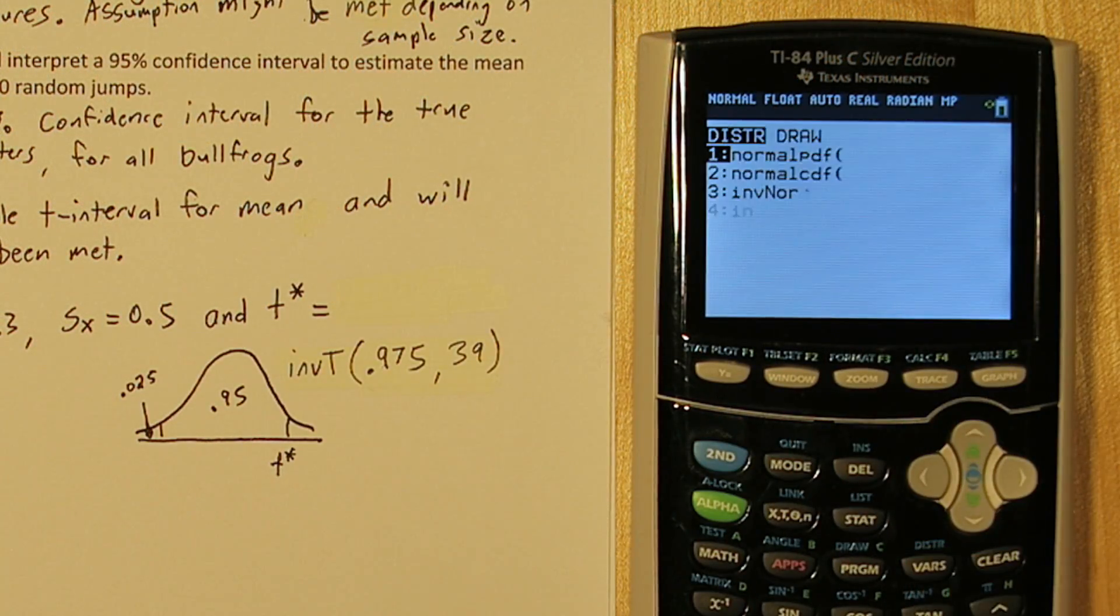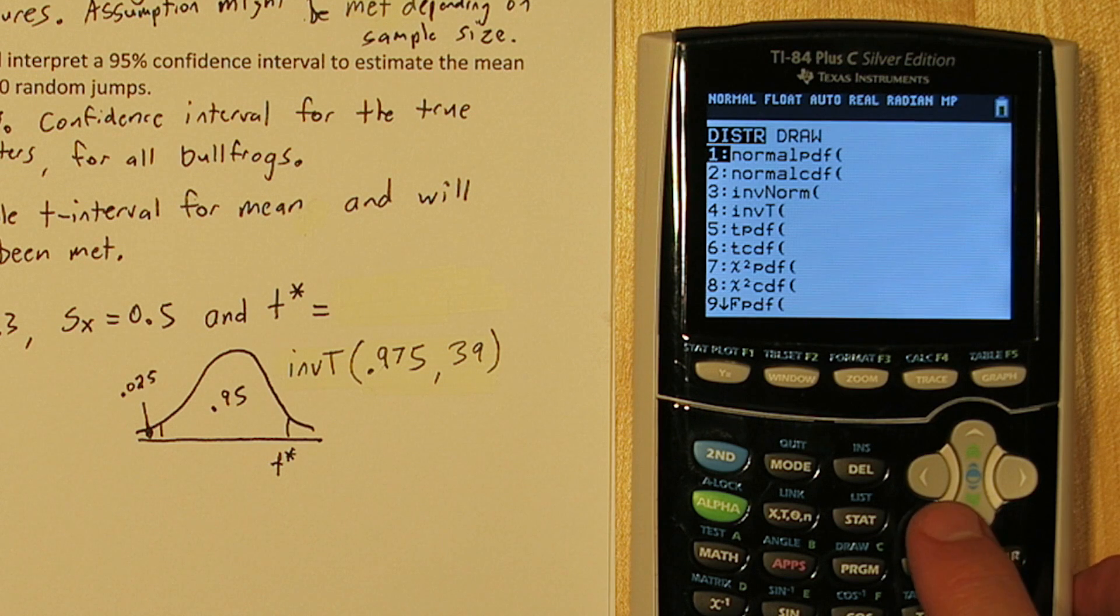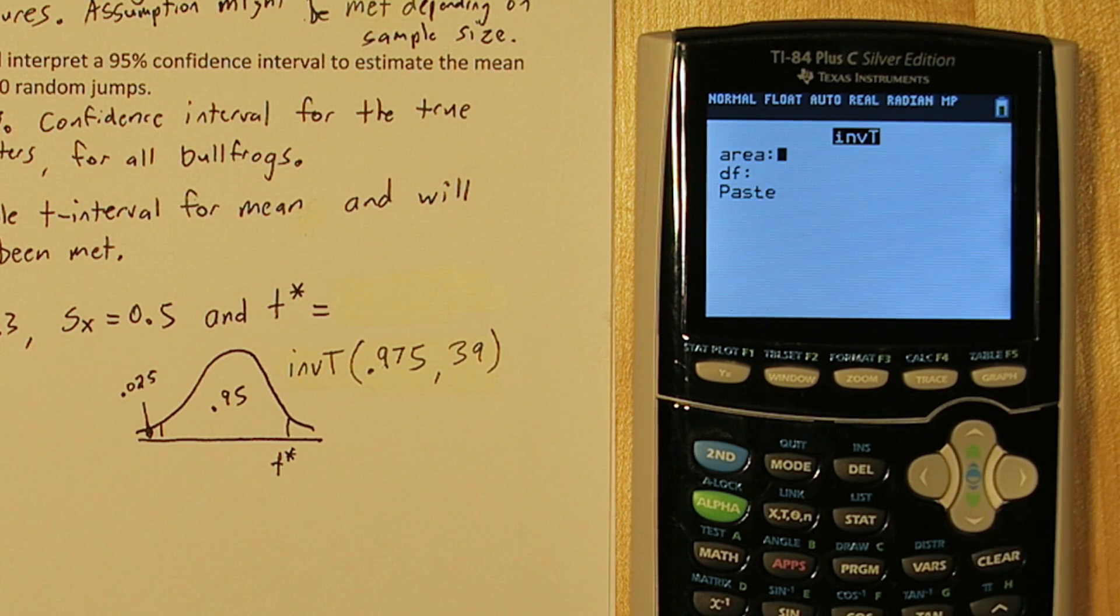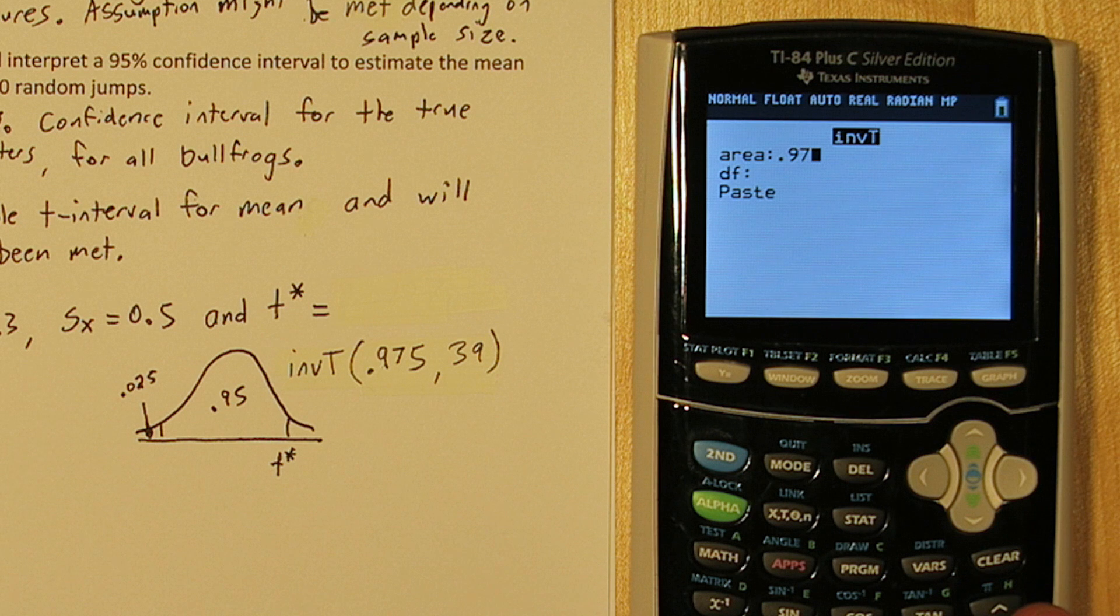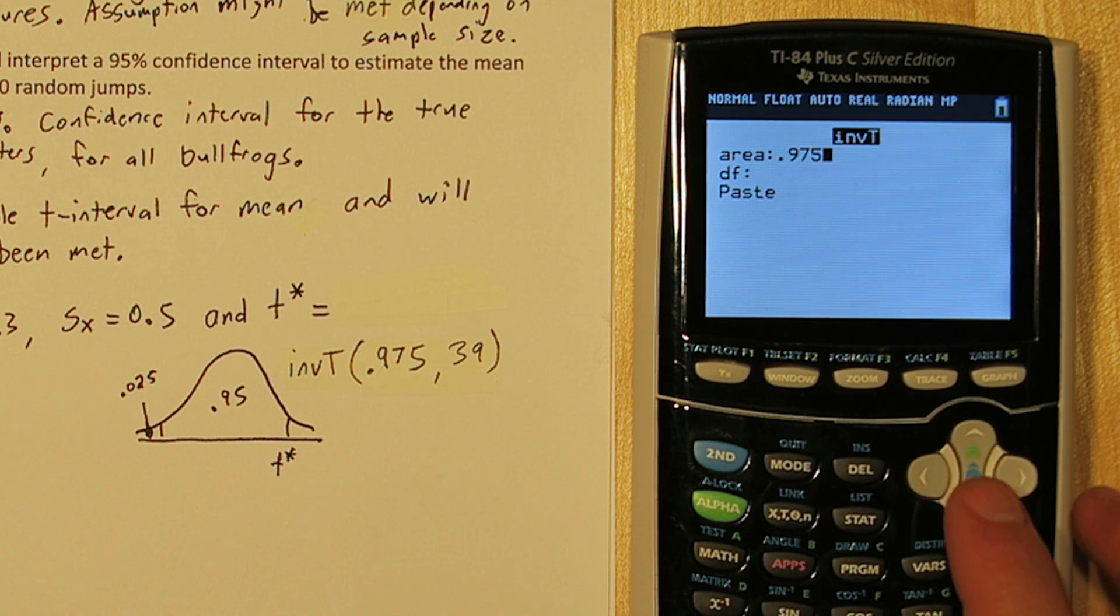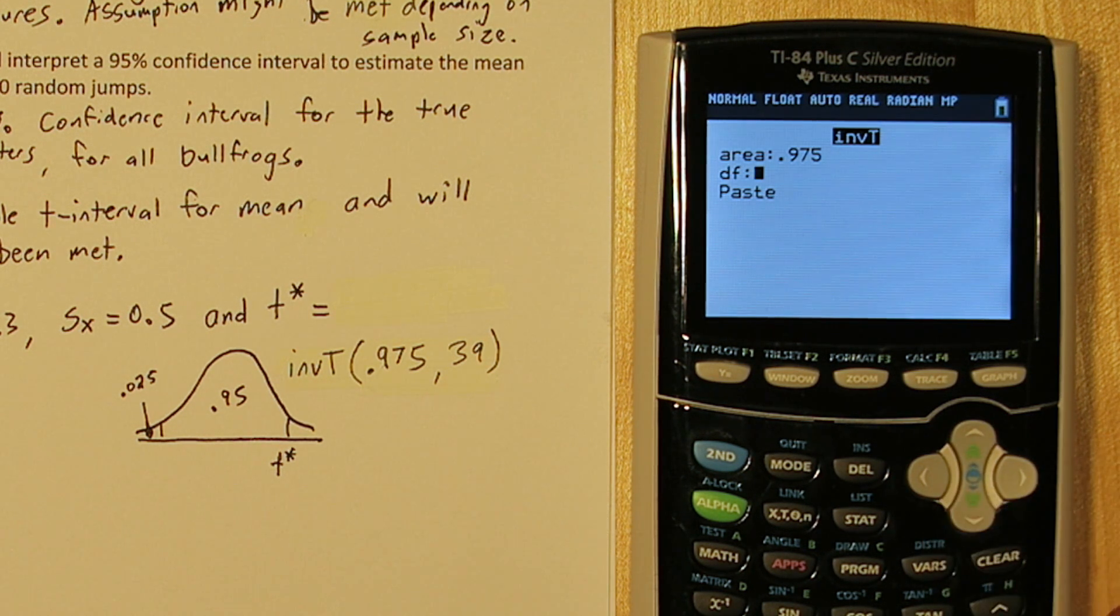Press 2nd then vars. This is your distribution menu. Go down to inverse T and again we're going to feed it 0.975 for an area. That's all the area to the left of this T star here, the middle area plus that one tail. Degrees of freedom is 39 and we'll press enter on paste and enter again.